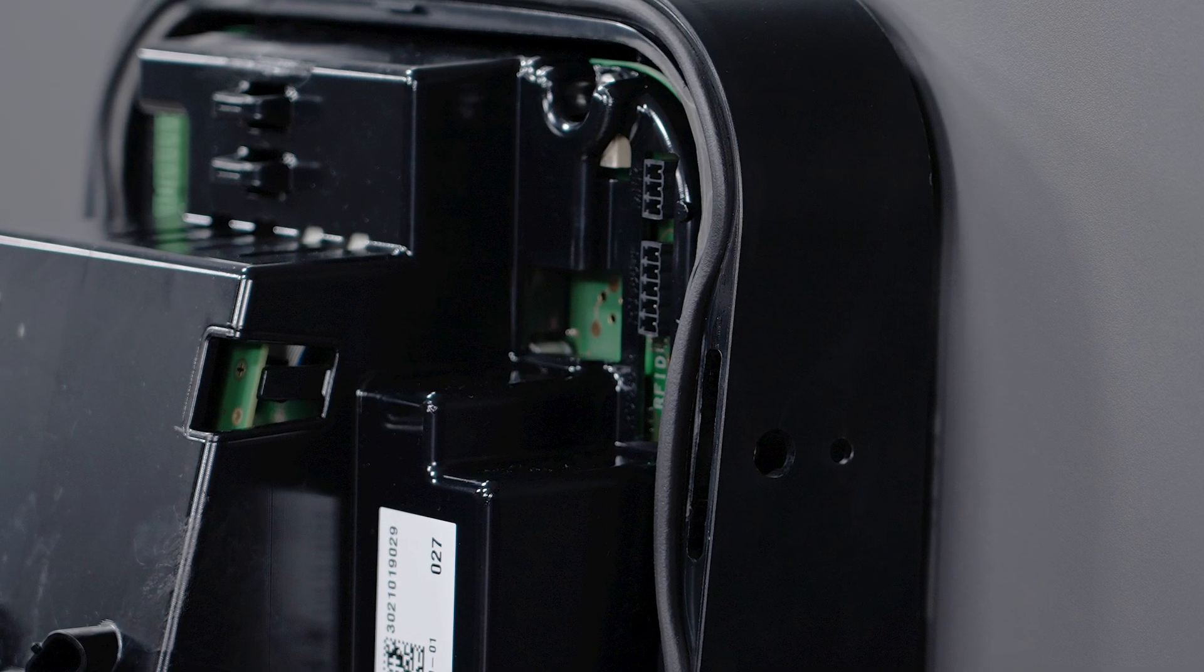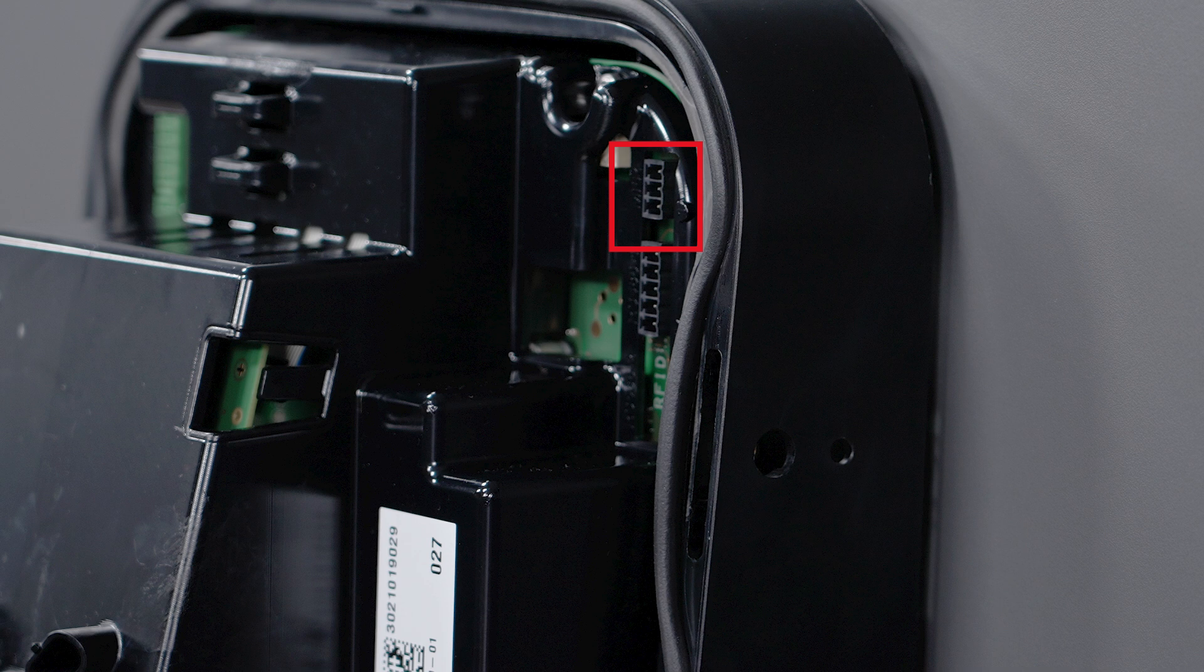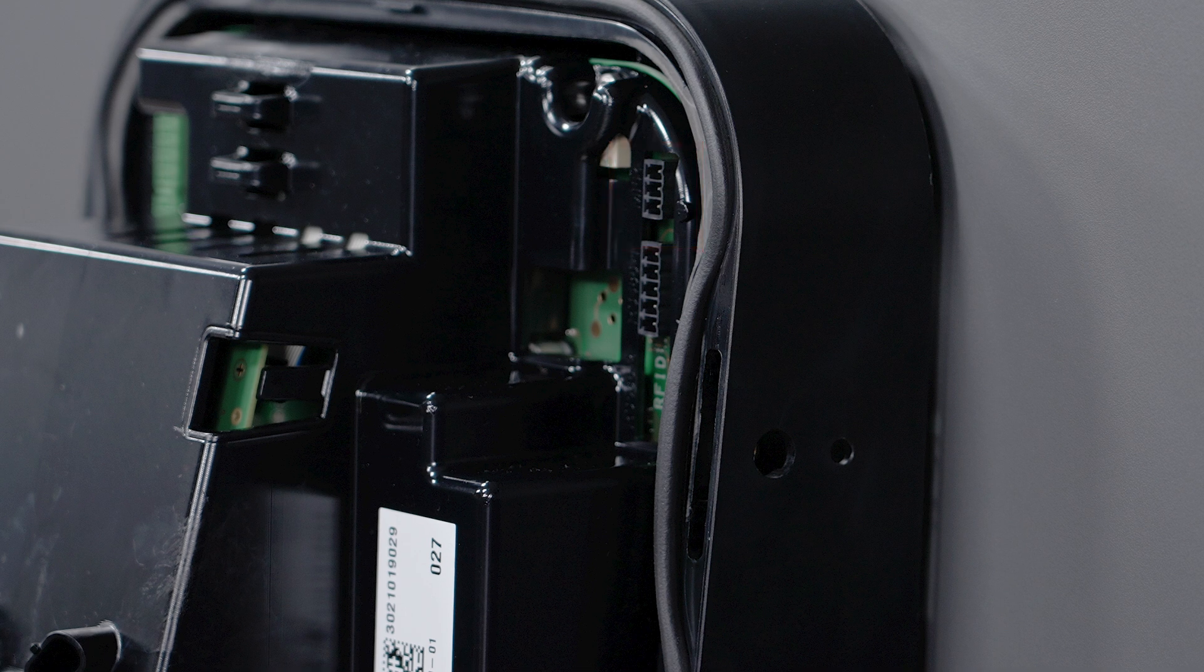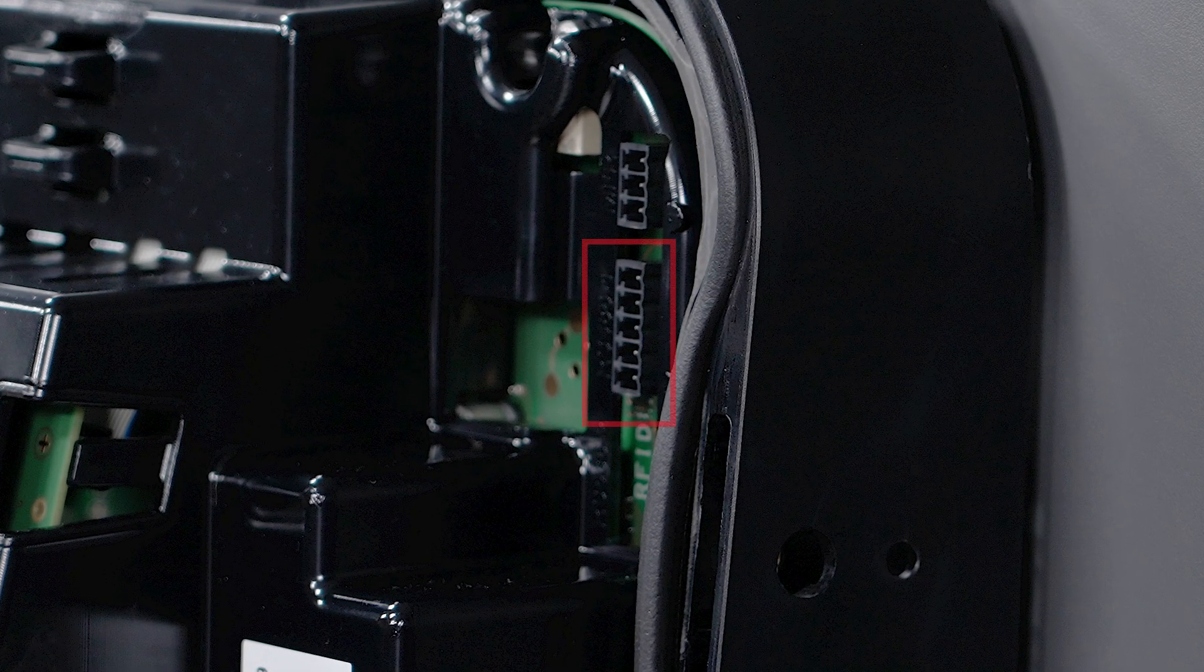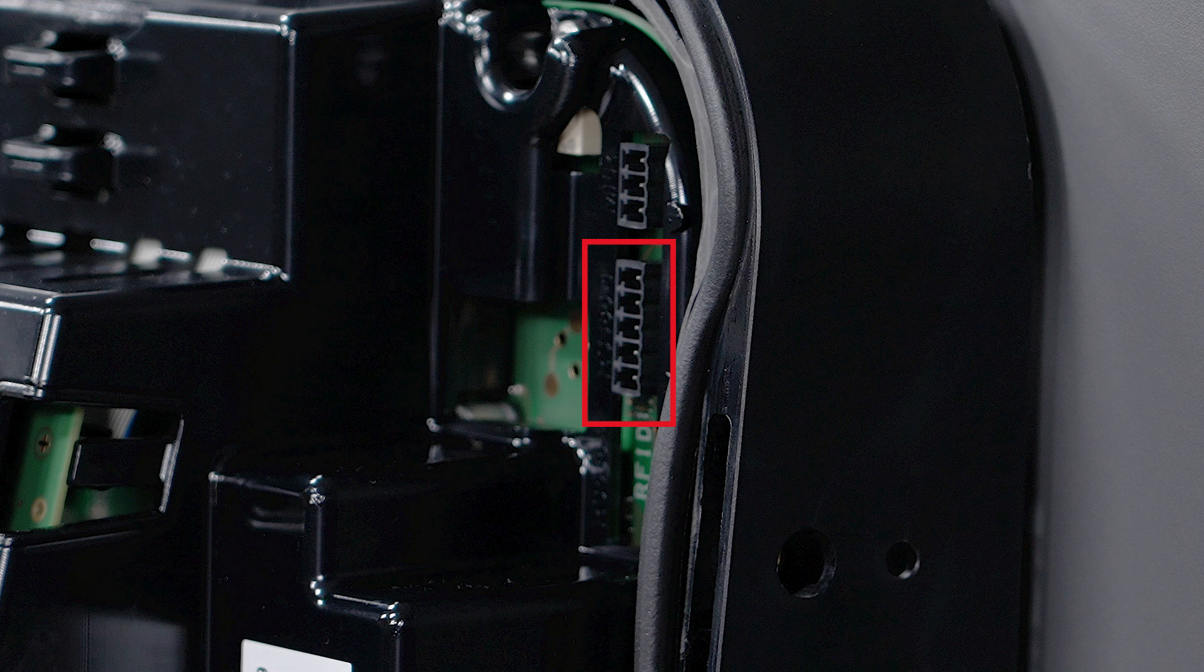There is also a digital output at the top right, a so-called multifunctional relay, for example for controlling a shuko socket for PV-optimized charging of an e-bike. Finally, there is the option of integrating an appropriate energy meter into the system via the RS485 interface.